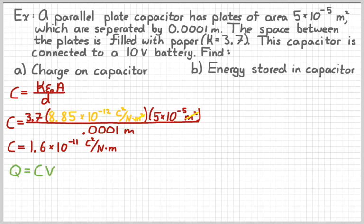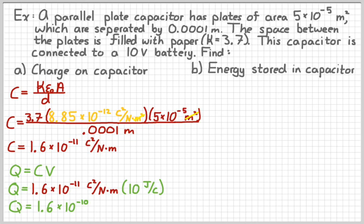Next, find the charge. Just plug into q equals c times v. And so, this is just simple multiplication. And so, just multiply by 10. Let me just change the number on my times 10 there. And then the coulombs squared will cancel out one of the coulombs on bottom there. Remember, a newton times a meter is the same as a joule. So, the newton meter and the joule cancels out, leaving me with just a coulombs, which is what we would expect our unit for charge to be.